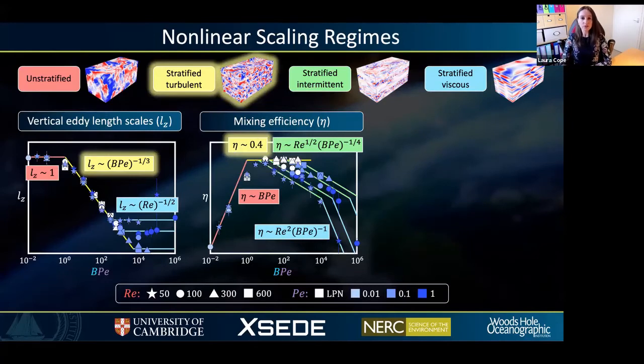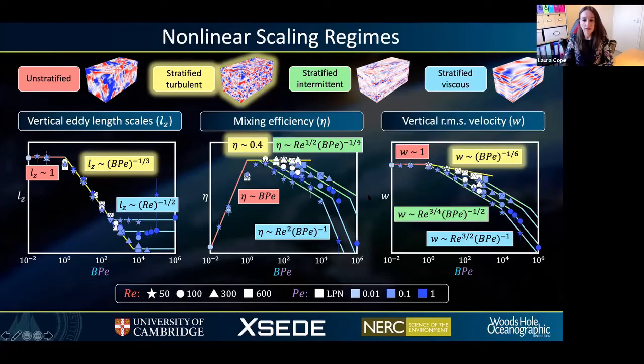In the stratified turbulence regime, our simulations show that the mixing efficiency is approximately constant, given by this yellow line here, and it's equal to about 0.4. Then it drops off significantly as BPe increases and we enter the intermittent regime. Finally, the root mean square vertical velocity field W is found to scale as BPe to the minus a sixth.